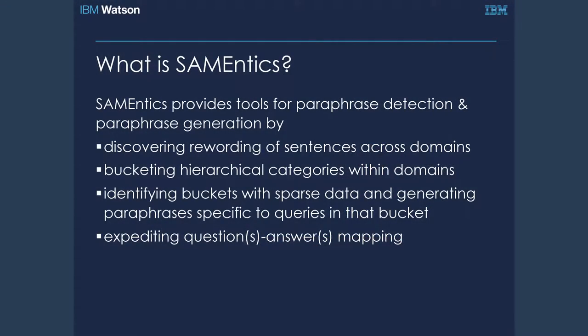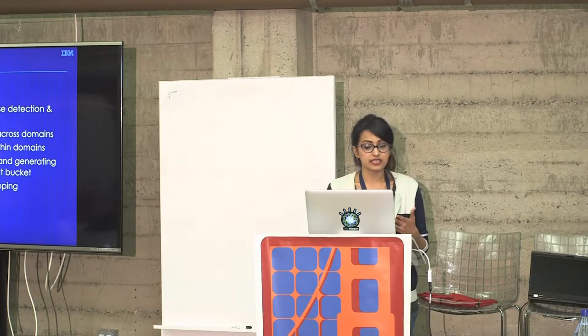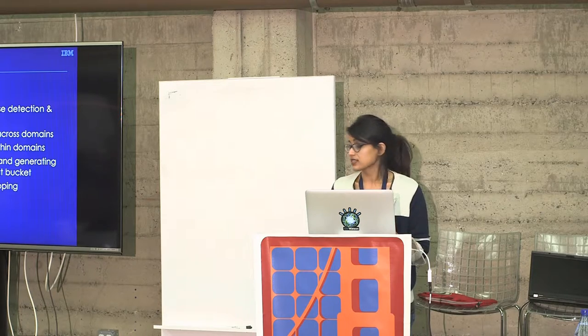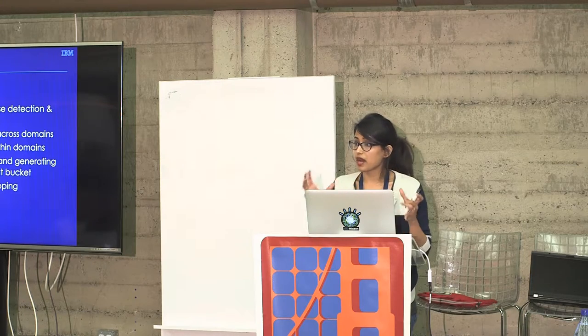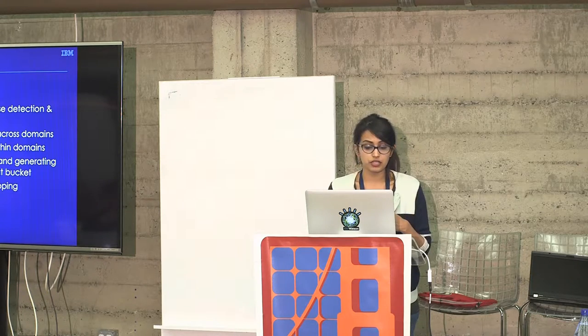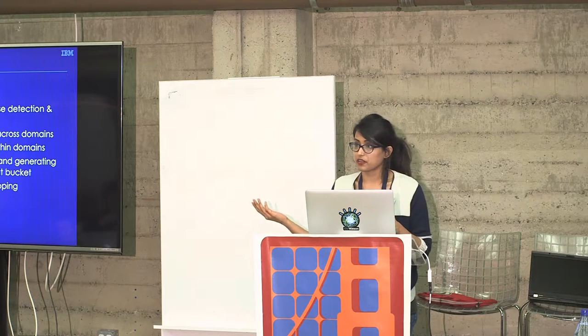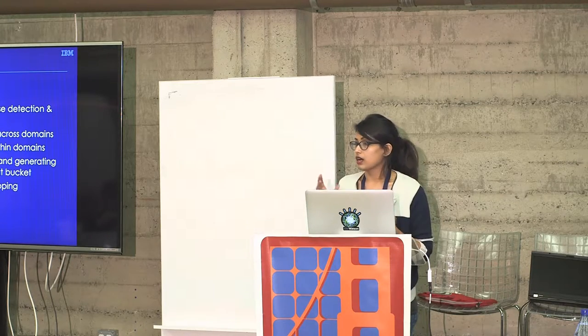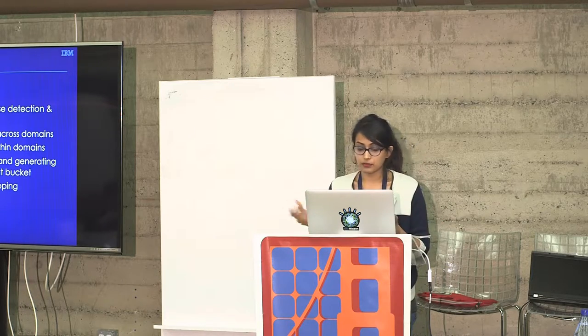This talk is going to be on Semantics, which is basically a spinoff on same plus semantics. It's tools for paraphrase detection and paraphrase generation. And it does this in four primary steps. The first is by discovering rewordings of sentences across domains, then bucketing these questions into hierarchical categories within the same domain, identifying those buckets which have sparse data. That's going to kick off the paraphrase generation piece so that you're able to enrich the overall training set for the deep QA system.